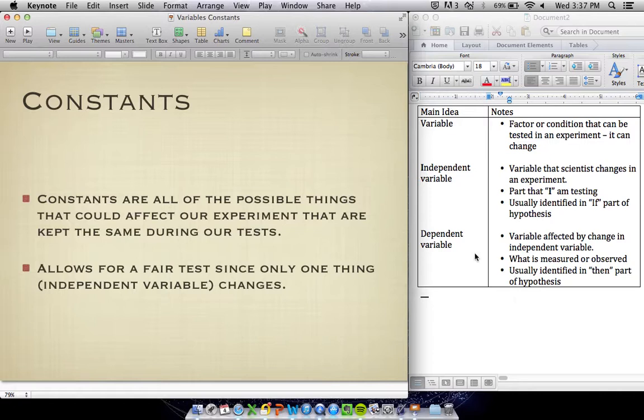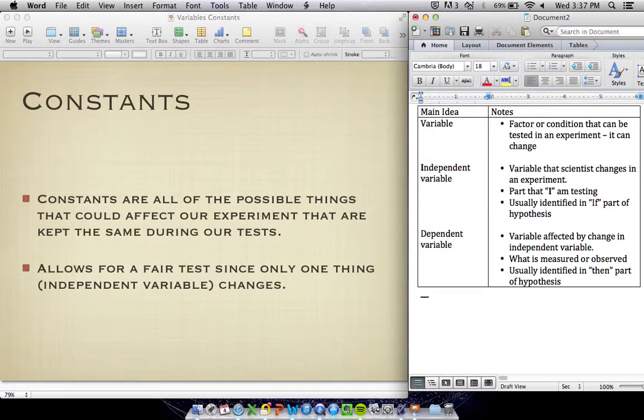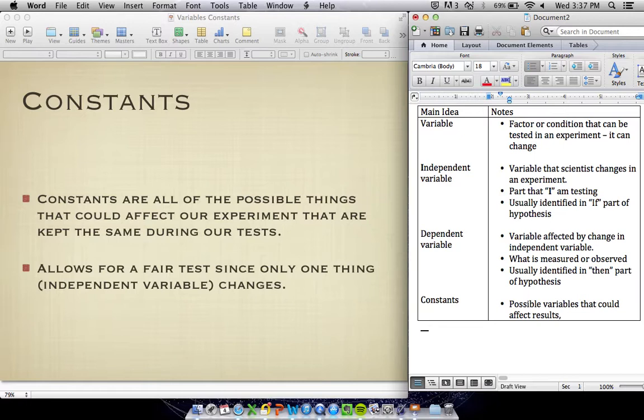Our last thing we're going to talk about are constants. A constant is something that could be a variable or could affect our results, but we keep these the same during any experiment. These are possible variables that could affect our results, so we keep them the same.